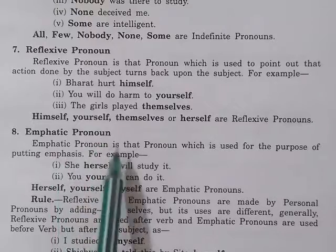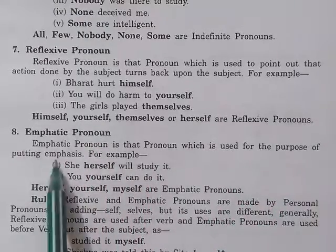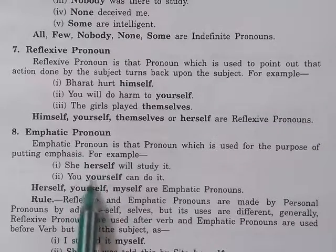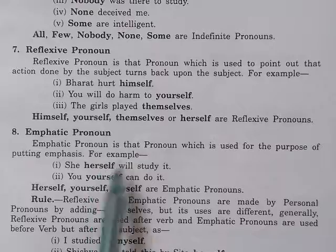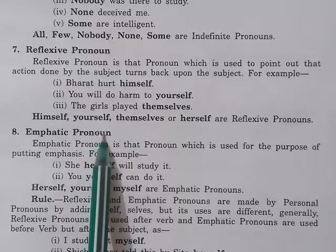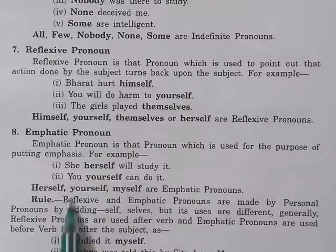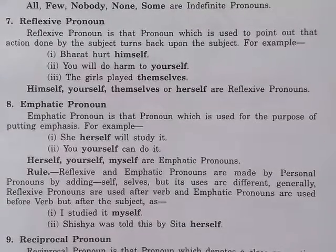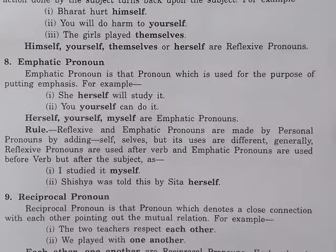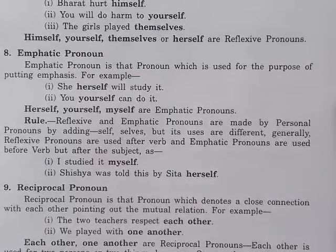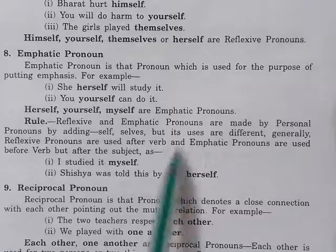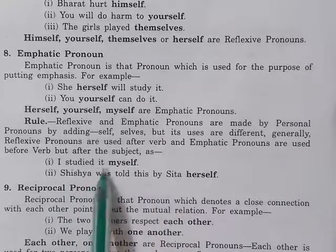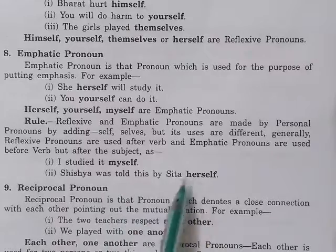The eighth one is emphatic pronoun. Emphatic pronoun is that pronoun which is used for the purpose of putting emphasis. For example: she herself will study it, you yourself can do it. Herself, myself, yourself are emphatic pronouns. Reflexive and emphatic pronouns are made by adding self or selves to personal pronouns, but their uses are different. Generally, reflexive pronouns are used after the verb and emphatic pronouns are used before the verb but after the subject.